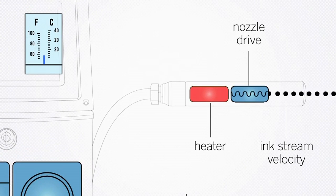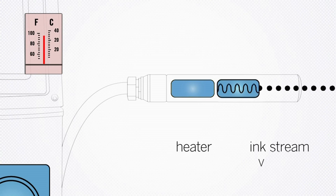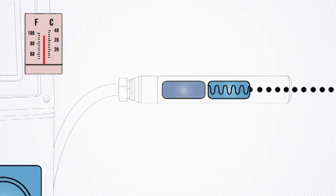The printhead heater is designed to maintain constant ink temperature even when ambient temperature and humidity changes. Thus, jetting characteristics remain constant under fluctuating conditions.